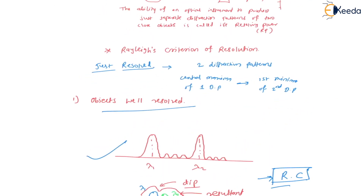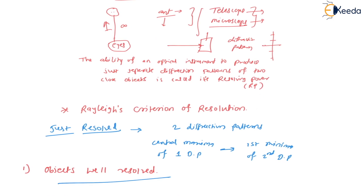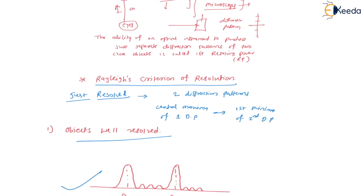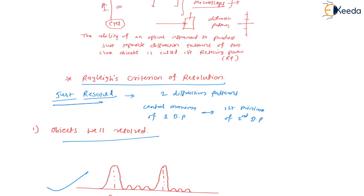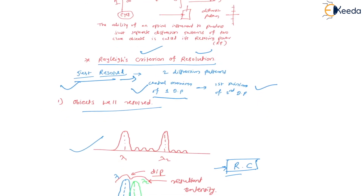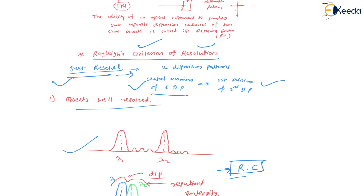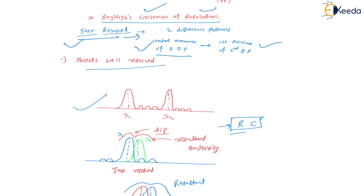So this is all about the resolving power of an optical instrument and Rayleigh's criterion for resolution. The criteria for just resolved objects is: the central maxima of the first diffraction pattern must fall at the first minima of the second diffraction pattern, and vice versa. I hope you understood resolving power and Rayleigh's criterion — kindly go through the concepts. In the next session we will discuss the resolving power of a grating, which is an important topic and most likely a question in your university examination. Thank you so much.